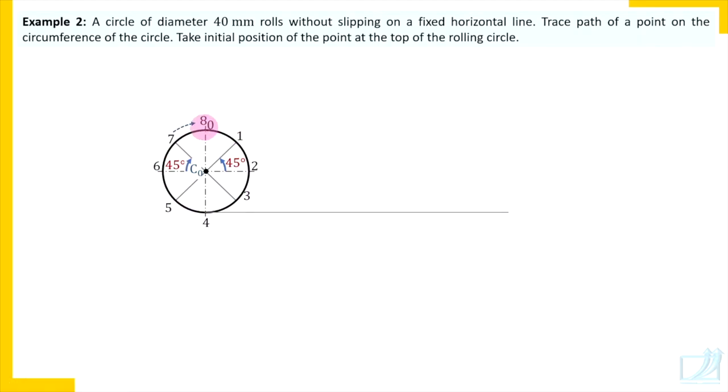After one complete revolution, final position is 8th position will be again the highest point. But of course, after one complete revolution, the point will be somewhere here at distance, horizontal distance πD. And that is why mark length πD on the guiding line. Divide that length πD in 8 parts. So how to divide that? First of all, mark 8 divisions on this inclined line.